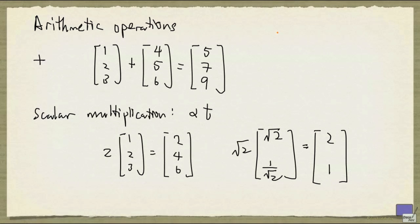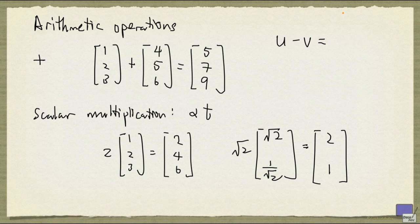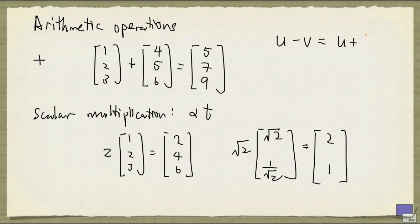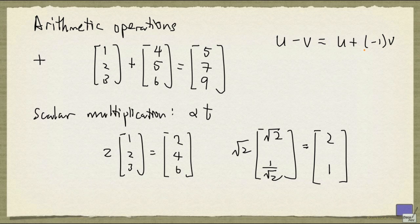Now what about subtraction? If u and v are n-tuples, u-v is simply u plus minus 1 times v. So you negate all the entries in v first, and then you add the 2. So that's subtraction.